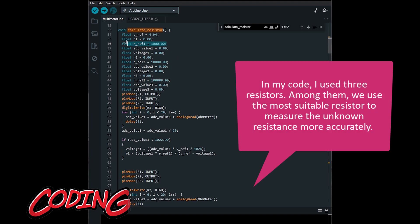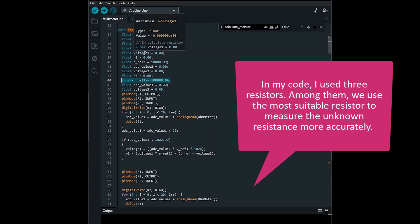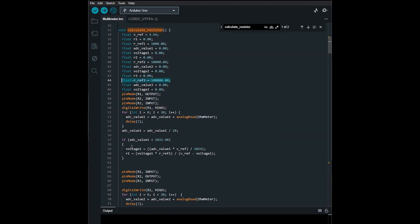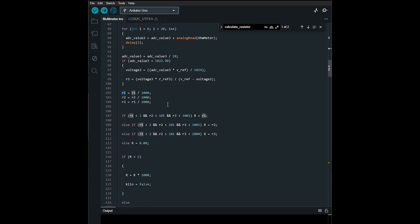In my code I used three resistors. Among them we use the most suitable resistor to measure the unknown resistance more accurately. One of their ends is connected to one of the pins of the unknown resistor and the other end of each of them is connected to one of the pins four to six of the Arduino. By applying a logical high level to each of these pins, the Arduino can select its known resistance. With this setup, you can measure resistances ranging from 10 ohms to 500 kilo ohms.